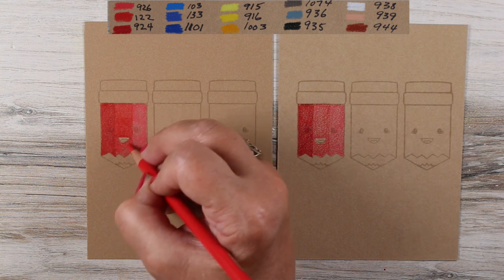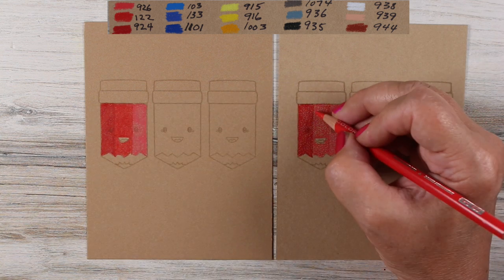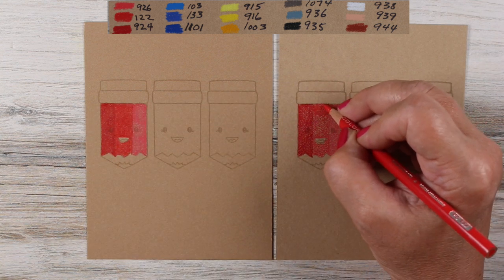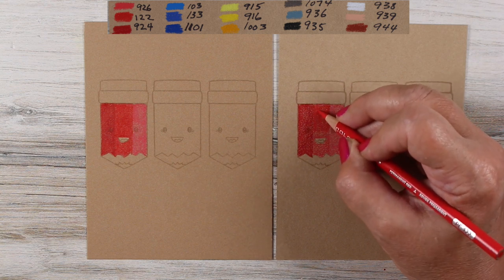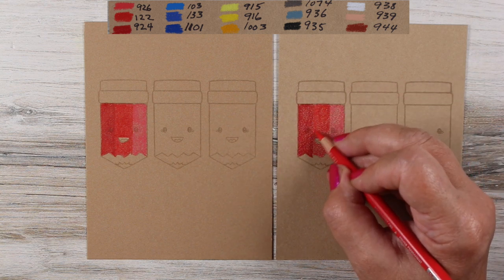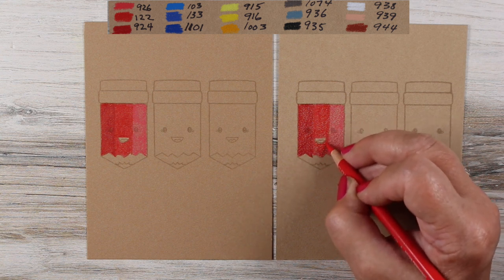When you get those little white spots or paper color spots in between, you get that because of the pencil skipping over the peaks and valleys in an uneven way. This paper has such a fine texture that it tends to work really nicely.